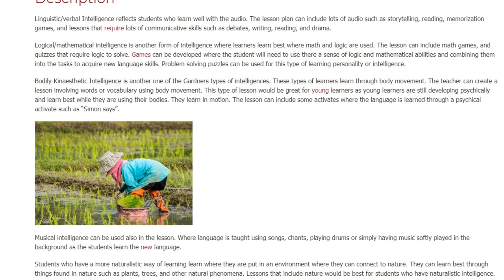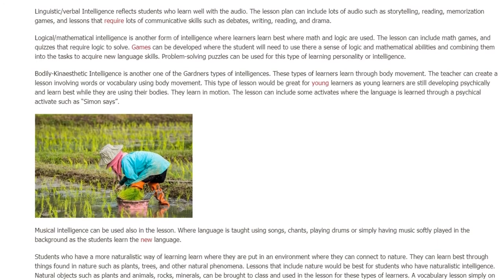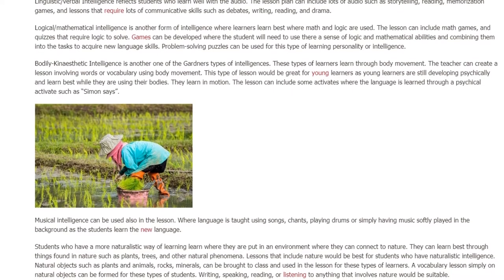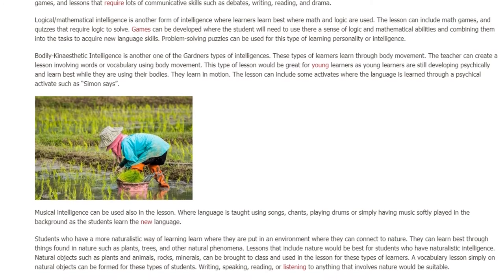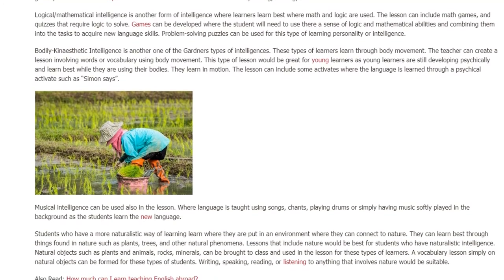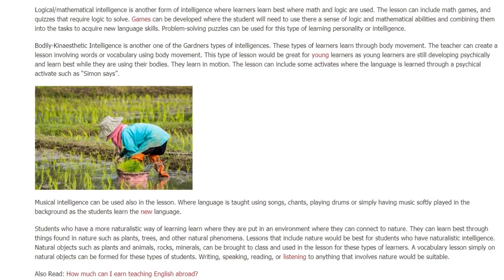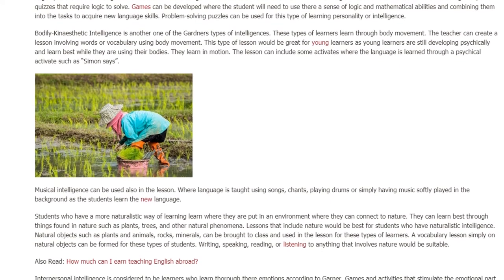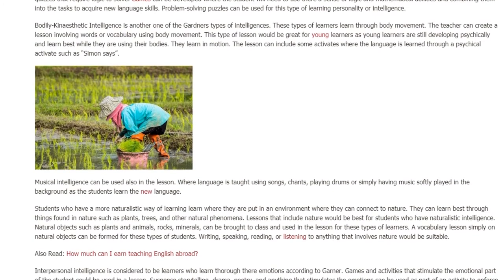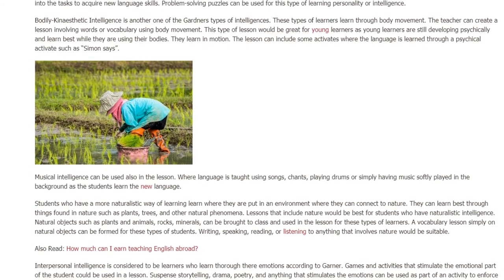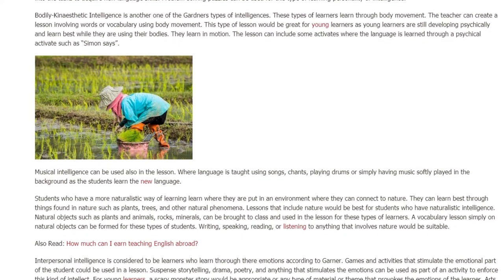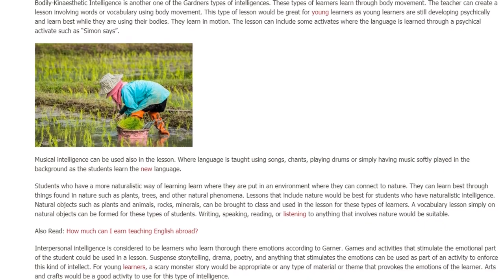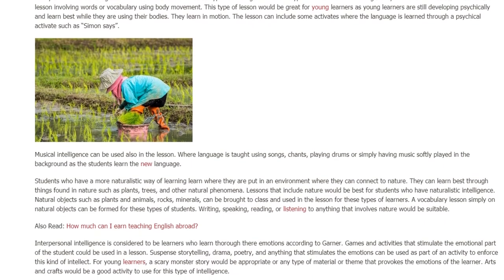Students who have a more naturalistic way of learning do best when placed in an environment where they can connect to nature. They learn best through things found in nature such as plants, trees, and other natural phenomena. Lessons that include nature would be best for students with naturalistic intelligence. Natural objects such as plants, animals, rocks, and minerals can be brought to class and used in the lesson. A vocabulary lesson simply on natural objects can be formed for these types of students.